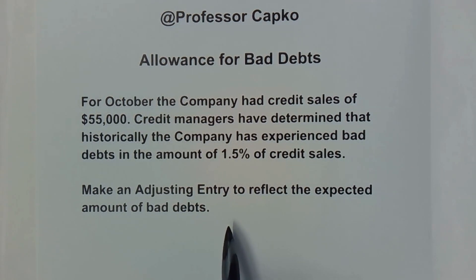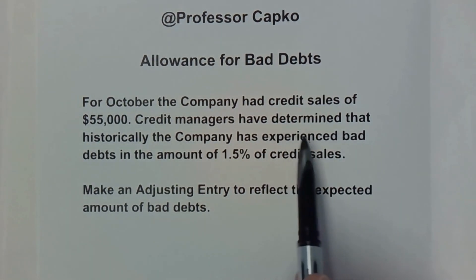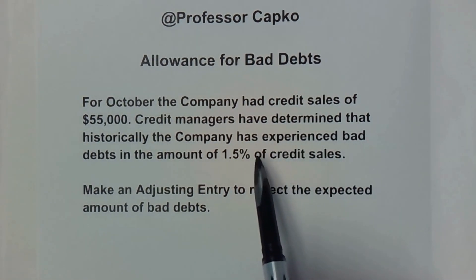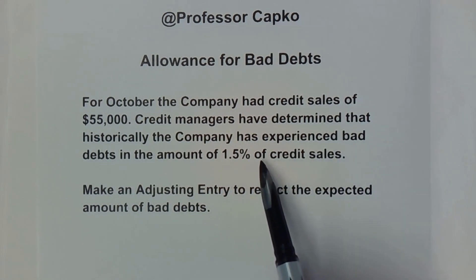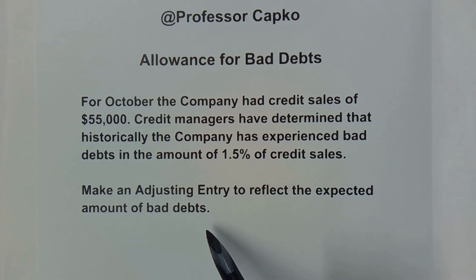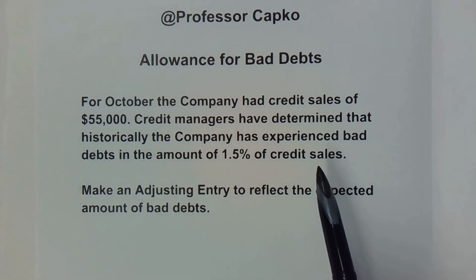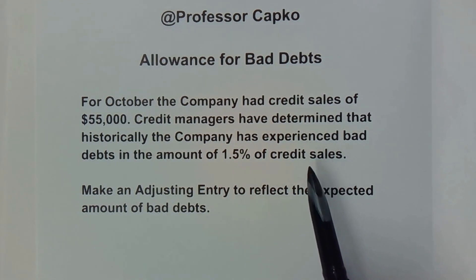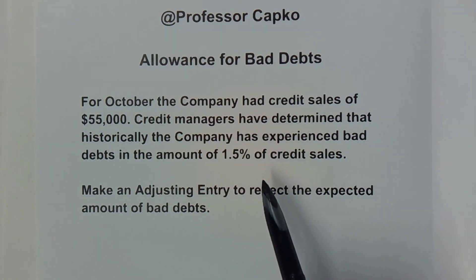So what is this talking about? This is talking about a company making sales on credit. The ordinary transaction would be debiting accounts receivable, which is an asset, and crediting the revenue or sales account, reflecting the sales being made in October.